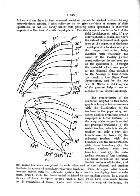Carpophagy: feeding on fruits and seeds. Catannulate: markings consisting of rings connected together like a chain. Catannulated antenna: antenna with ringed appearance.